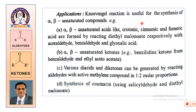These are the various applications. The Knoevenagel reaction is useful for the synthesis of alpha-beta unsaturated compounds. Unsaturated acids like crotonic, cinnamic, and fumaric acids are obtained. Unsaturated ketones are also obtained. Various diacids and diketones can be generated, and the synthesis of coumarin using salicylaldehyde and diethyl malonate is possible using this reaction. Go through these reactions and prepare for MCQ-type questions. Thank you.